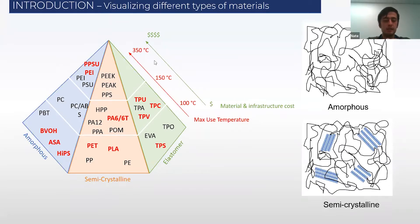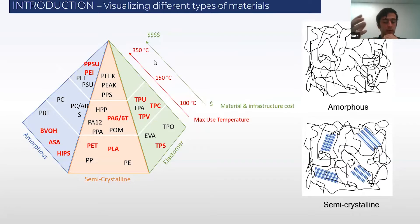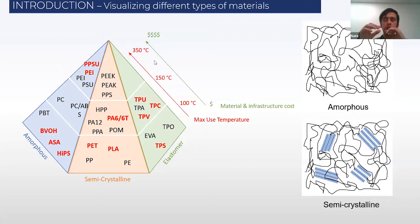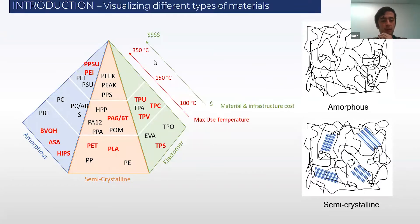Your amorphous materials, as you can see on the top right, don't have any crystalline structure. These amorphous materials tend to be a little easier to print with. They also tend to be a little bit more clear, because with semi-crystalline materials, the actual material itself will reflect light differently. Amorphous materials tend to be easier to print with and a little bit tougher. Whereas semi-crystalline materials, because of that specific arrangement on the molecular level, tend to have better hardness as well as more chemical resistance.